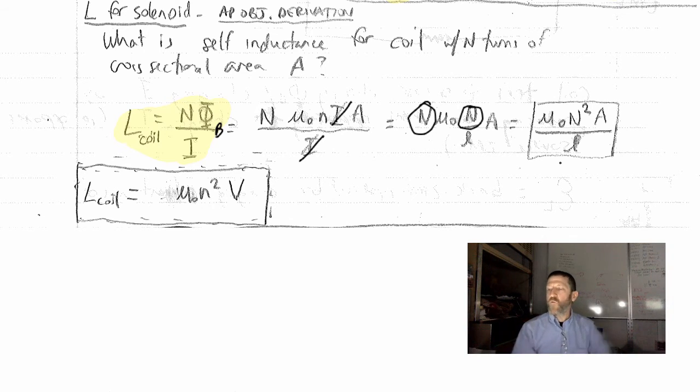per unit length. Now one way we like to express this is like this: the inductance of a coil is μ₀n²V, where V is the volume of the coil. How the heck do we get that? Let's go ahead and show that right now.